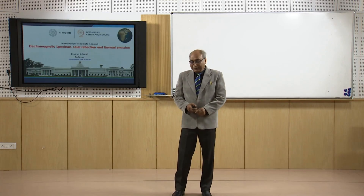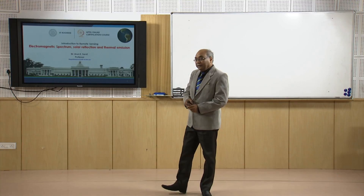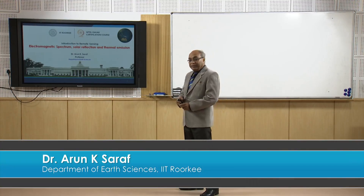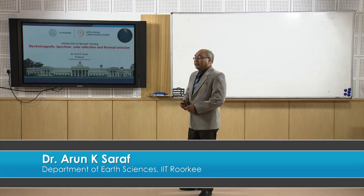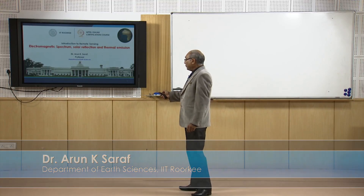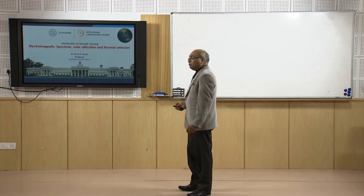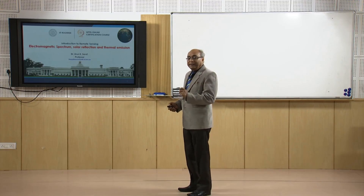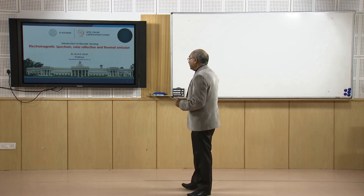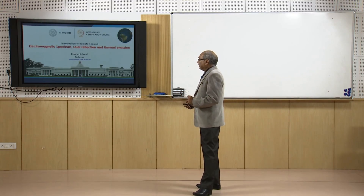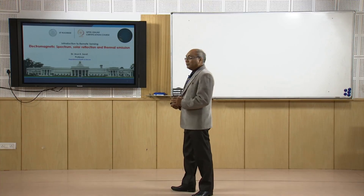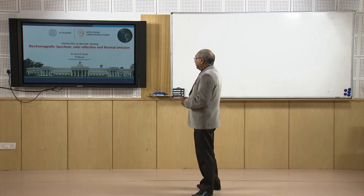Hello everyone, this is the fourth lecture of the Introduction to Remote Sensing course. In this particular lecture we will be covering topics of electromagnetic spectrum, which is very important to understand the entire gamut of remote sensing, and solar reflection, which will include the passive part — solar reflection — and thermal emission as well.